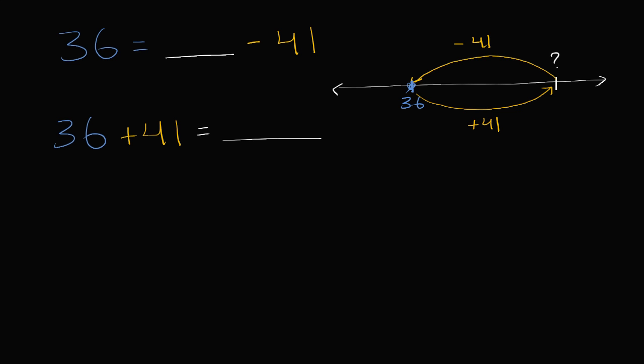Well, we could add, we could add our, let's add our ones first. So we have six ones plus one one. That is seven ones. And then we have three tens plus four tens, which is seven tens. 77. So this is 77. And we're done.